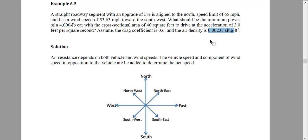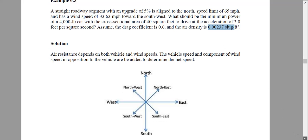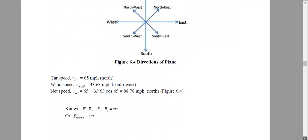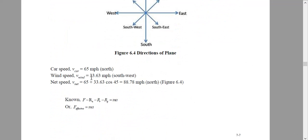The approach is to find the resistance first. Once we know the resistance, we use F_applied minus F_resistance equals ma. Whatever force we apply, some will be lost to resistance. To find resistance, we first need the speed, so let us convert the speed.